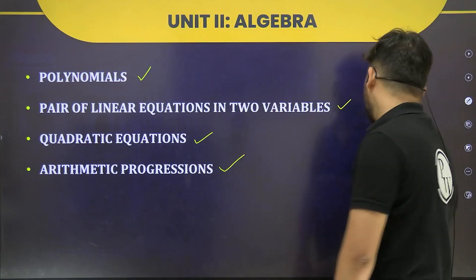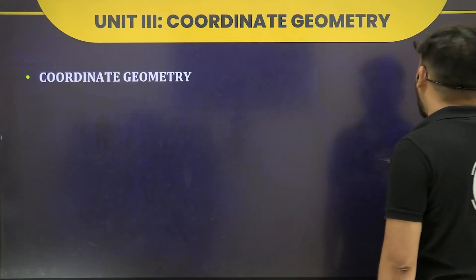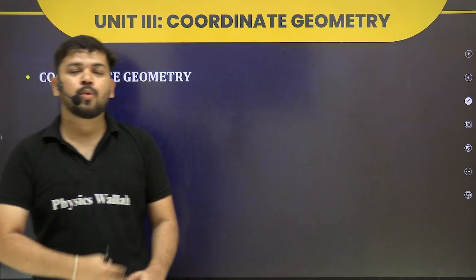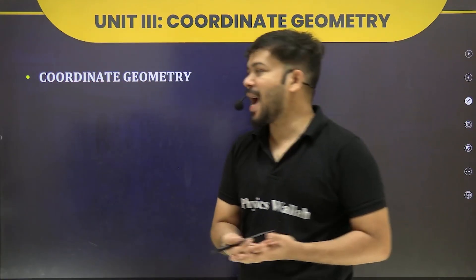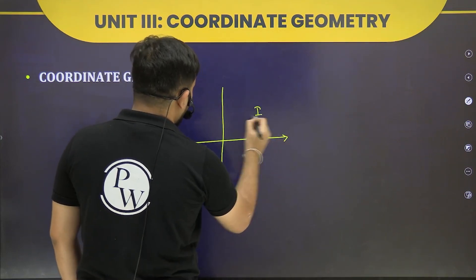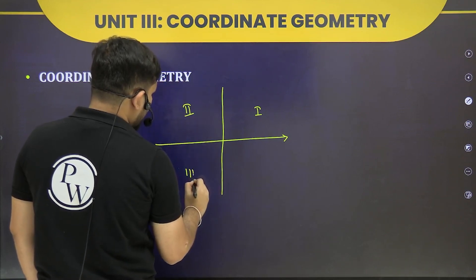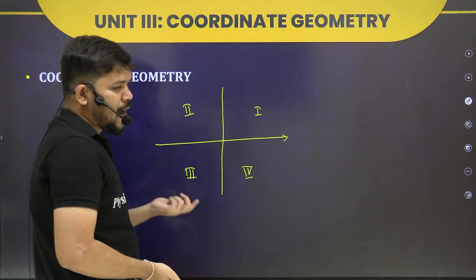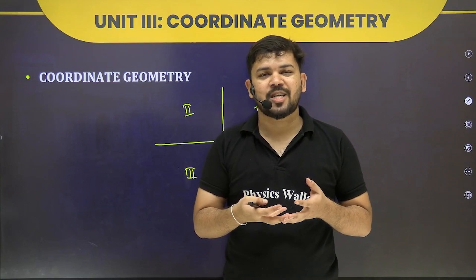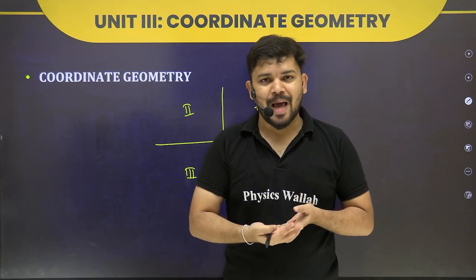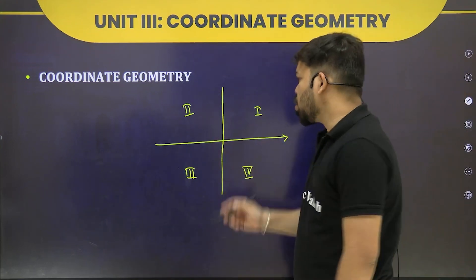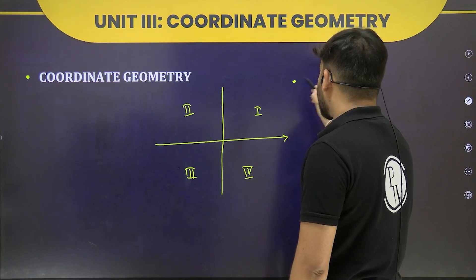Next is Coordinate Geometry. Here we have the Cartesian plane — how it is divided, what the x-axis and y-axis mean, the quadrants, the origin, and how x and y values are represented. We will also cover the distance formula to calculate the distance between two points when their coordinates are known.